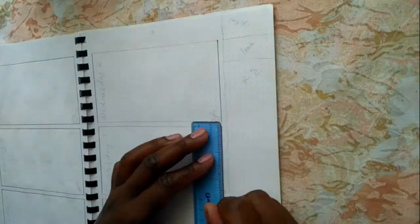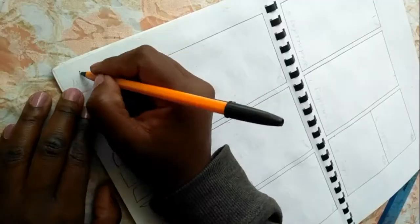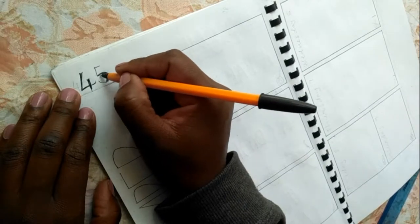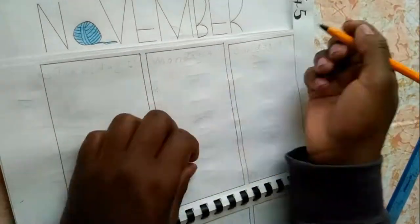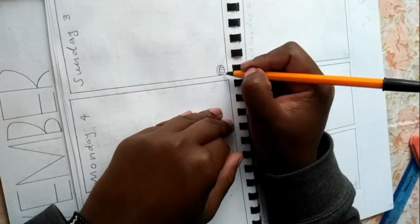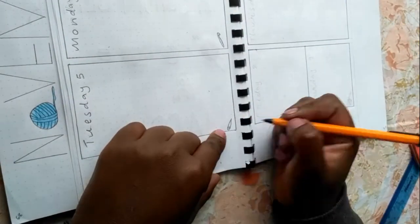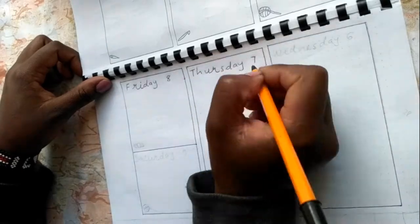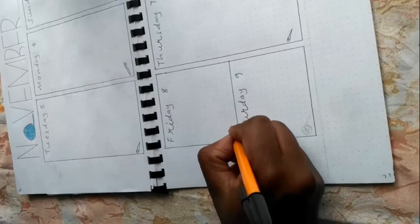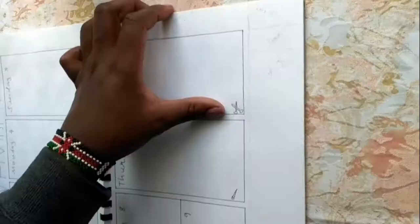Finally I'm setting up the first weekly spread for the month of November. Remember the spot I'd left at the top? That's where I'll write in the week number, we're at 45. Then writing all my days and dates, adding in a little bit of doodles to keep up with the theme.